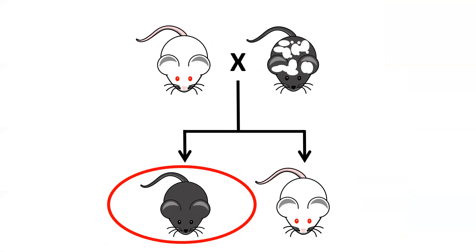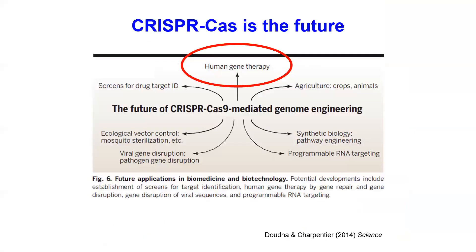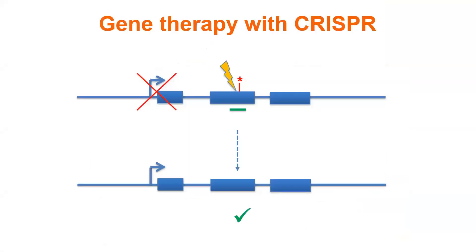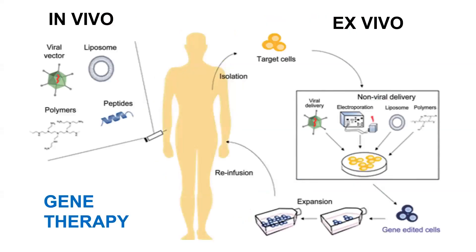This mouse should be uniformly pigmented but it's patchy — it's a mosaic because the correction of the tyrosinase gene hasn't occurred in all cells. With mice we can breed this mosaic mouse with a wild-type albino mouse and in the next generation segregate the pigmented and albino phenotypes, but we cannot do this with people. CRISPR-Cas is the future and particularly the future with gene therapy: we can provide a template, cut near the mutation, and hope that the genome editing tools will correctly repair it — in vivo or ex vivo.